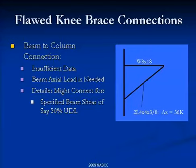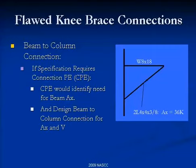That's just pure simple statics. So you've got insufficient data to design the beam-to-column connection. What does the detailer do? If no axial load were shown in the beam, the detailer might model it using only the specified shear — maybe 50% UDL — which would not be prudent. In that case, you'd get a bad beam-to-column connection because there would be no consideration of axial load. If it happened to work, it would be coincidence.